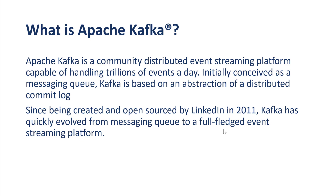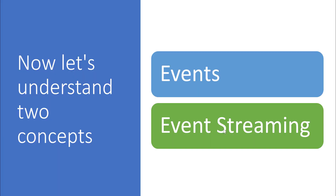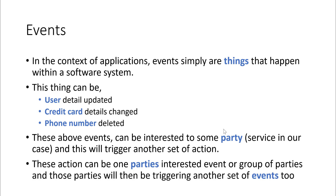The first key concept in event-driven architecture is events and event streaming. In the context of our application, events are simply things that happen within a software system — like a user detail being updated, a credit card detail changed, or a phone number deleted. These events can be of interest to certain parties (services), triggering another set of actions — either for one party or a group — creating a chain of events.